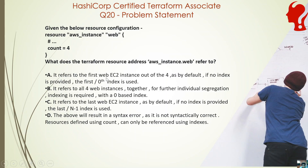Option A refers to the first web EC2 instance out of the 4. There are 4 web instances because, by default, since there is no index provided, the first or zeroth index is used. Option B refers to all 4 web instances together, because for further individual segregation, indexing is required with a zero-based index. So there is no indexing, meaning aws_instance.web refers to all 4 web instances. Option C says it refers to the last web instance — the fourth — as by default if no index is provided, the last or n-minus-1 index is used.